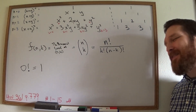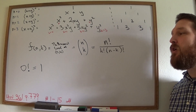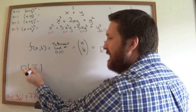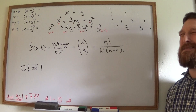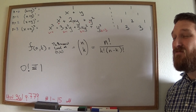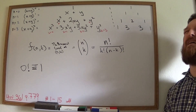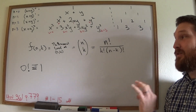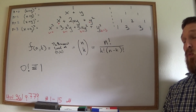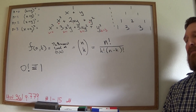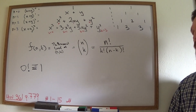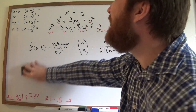One more thing you need to know: plugging in zero will give you zero factorial. Zero factorial is defined as 1 — not zero. There's actually a very good reason why zero factorial must equal 1 for math to work, which we'll discuss later. So zero factorial equals 1.